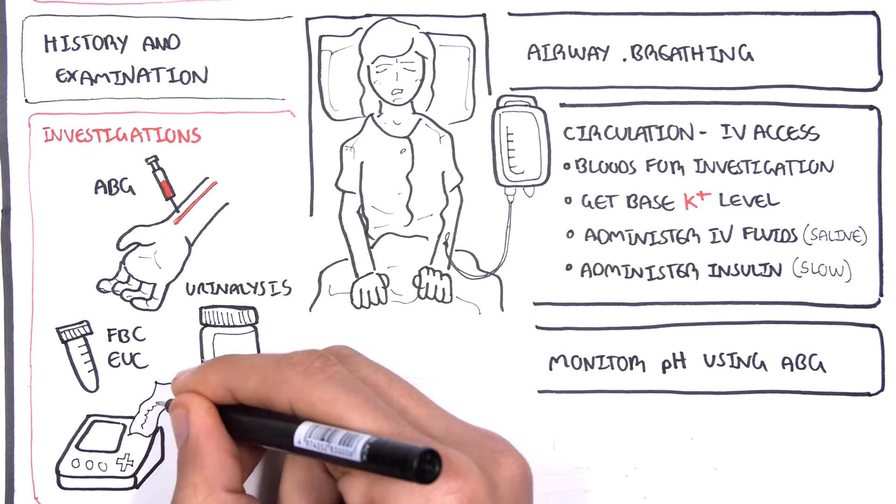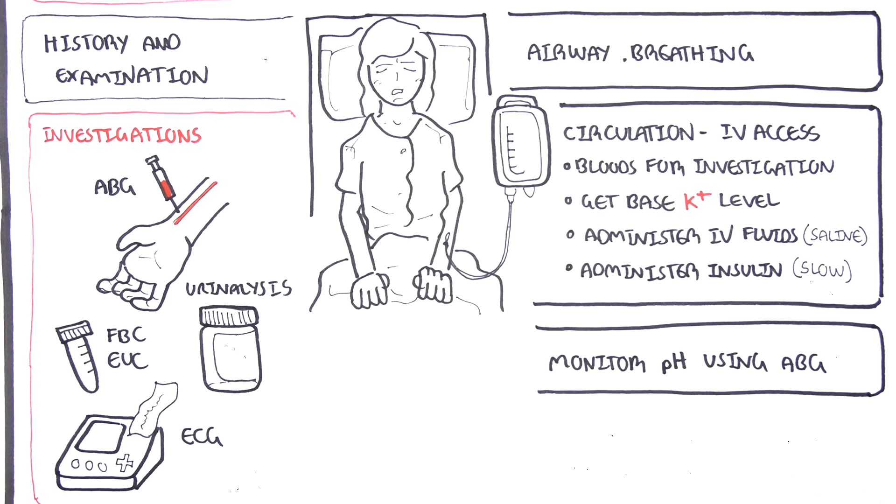ECG is performed to check for arrhythmias in case of potassium hyperkalemia or hypokalemia. So again, monitoring pH by doing regular arterial blood gas is important. And also it is important to monitor serum potassium levels.